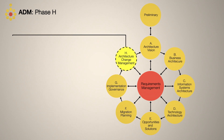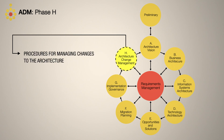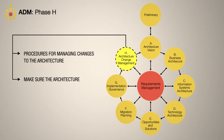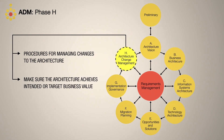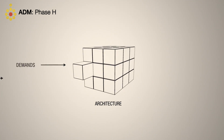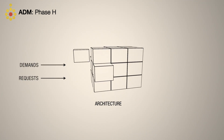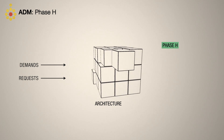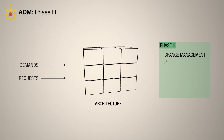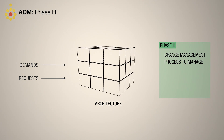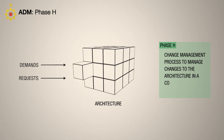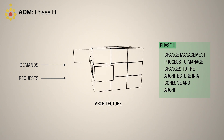Phase H is about having the right procedures in place for managing changes to the architecture. The goal here is to make sure that the architecture achieves its intended or target business value. Nothing ever goes exactly to plan and there will always be new demands and requests to change the architecture. Phase H describes the change management process to manage changes to the architecture in a cohesive and architected way.